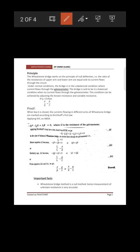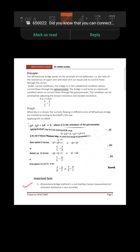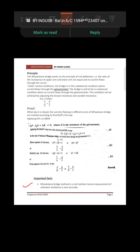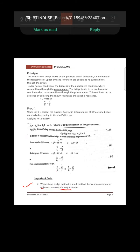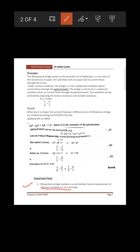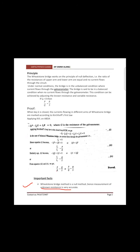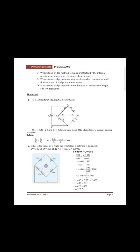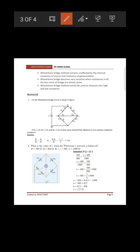Now let's learn the important facts about Wheatstone bridge. It is a null method because we find the unknown resistance without withdrawing any current — since we use the concept of zero (null) deflection in the galvanometer. That is why the Wheatstone bridge method is called a null method.